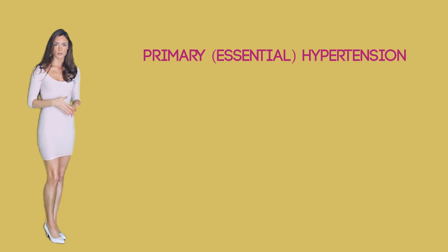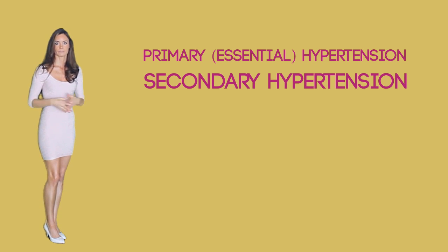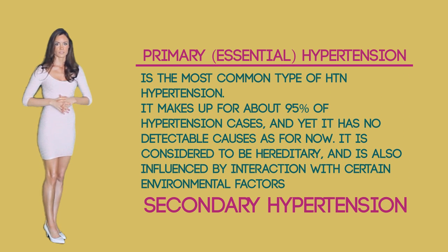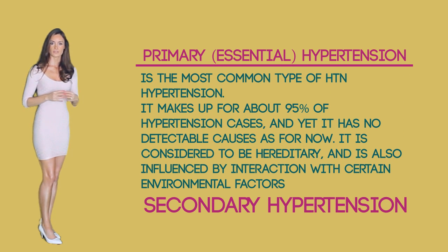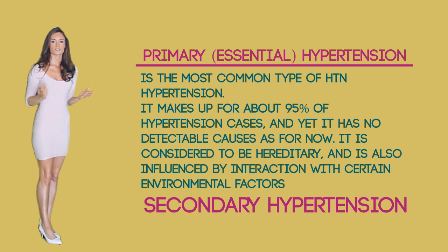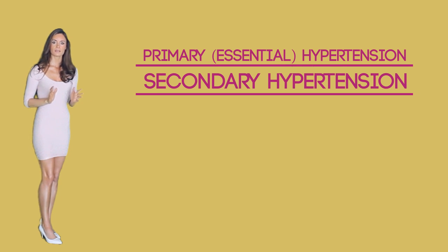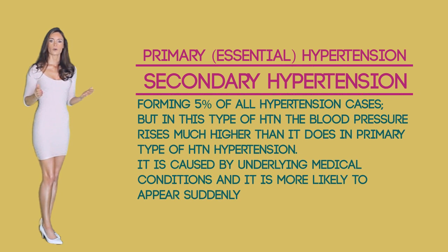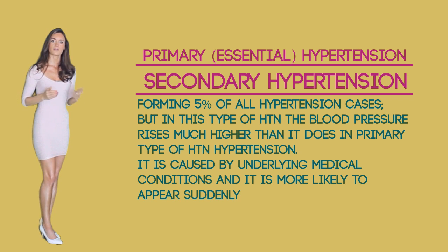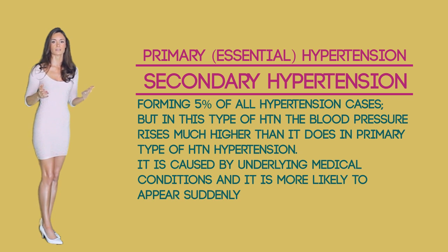Causes. Based on the cause, there are two types of hypertension: primary, also known as essential hypertension, and secondary hypertension. Primary hypertension is the most common type, making up about 95 percent of hypertension cases and yet has no detectable causes as of now. It is considered to be hereditary and is also influenced by interaction with certain environmental factors. Secondary hypertension is a lot less common, forming five percent of all hypertensive cases, but in this type the blood pressure rises much higher than in the primary type.